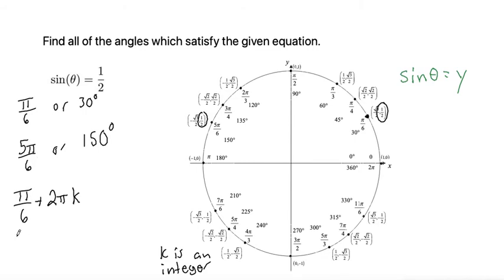We can do the same thing with 5 pi over 6. It could also be plus 2 pi k. So this would be our answer if we are wanting our answer in radians.